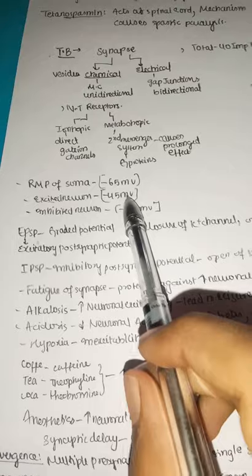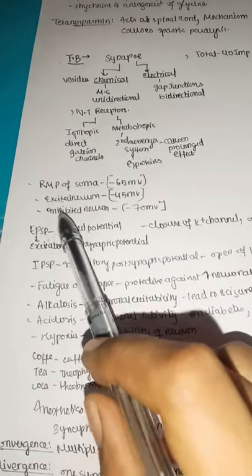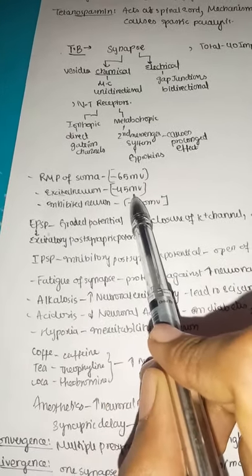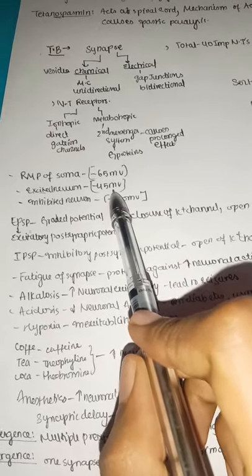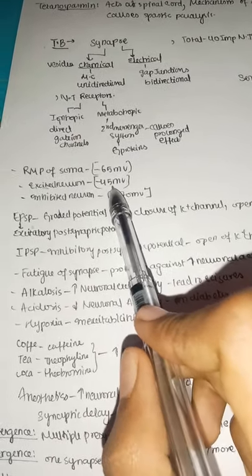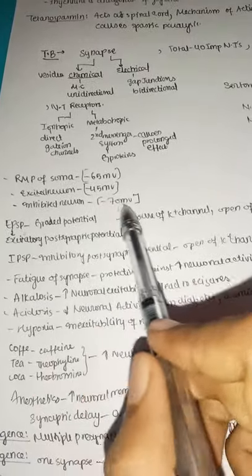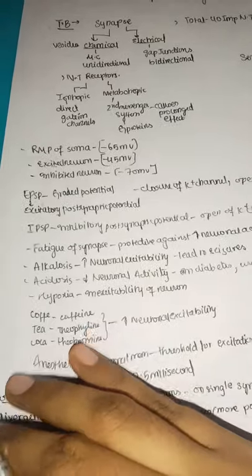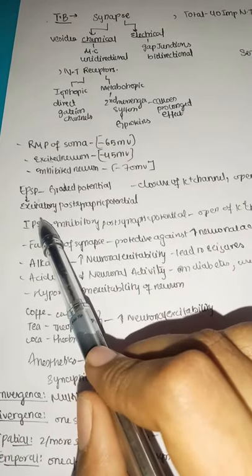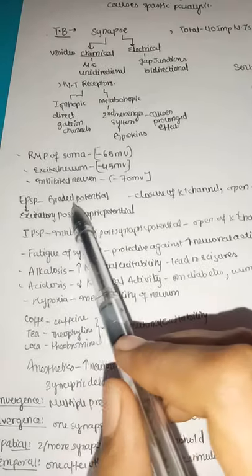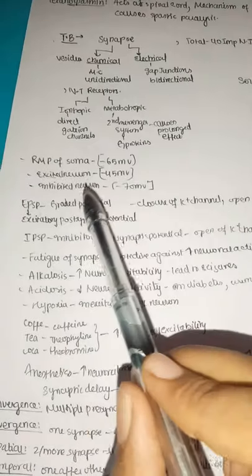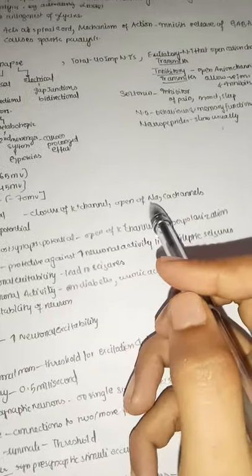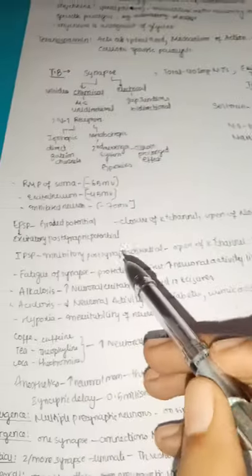The resting membrane potential of the soma is about minus 65 millivolts. When the neuron is excited it moves toward minus 45 millivolts — becoming more positive. An inhibitory neuron goes to minus 70 millivolts — more negative than resting. EPSP is the excitatory postsynaptic potential, a graded potential caused by closure of potassium channels and opening of sodium and calcium channels, bringing positive ions inside.